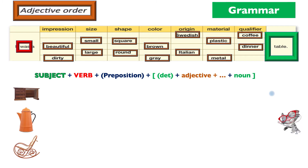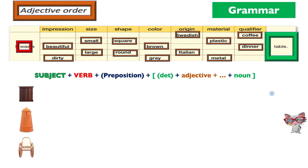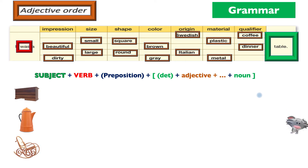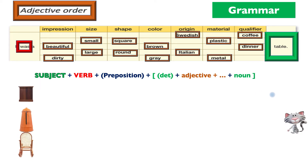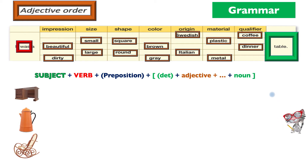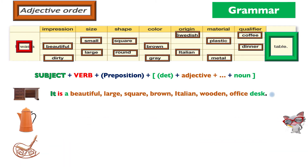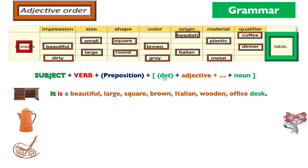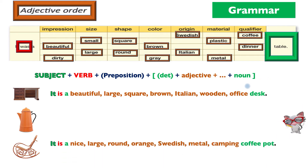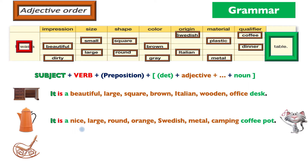Looking at some objects, the first one is a brown oak desk. We have to give it a subject first — it's a desk. So: it is a beautiful large square brown Italian wooden office desk. We've taken impression (beautiful), size (large), shape (square), color (brown), origin (Italian), material (wooden), and qualifier (office).